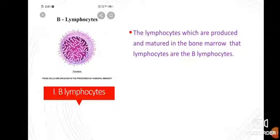The first type is B lymphocytes. The lymphocytes which are produced and matured in the bone marrow are called B lymphocytes. The letter 'B' stands for bone marrow — because these lymphocytes are both produced and matured in the bone marrow.